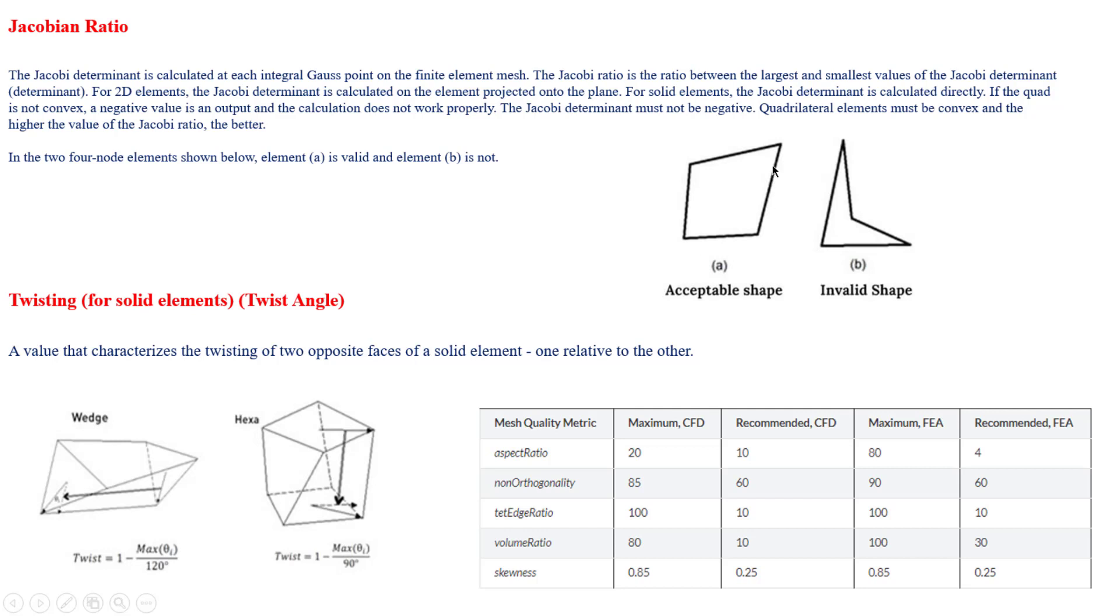When it comes to Jacobian ratio, you can see the example. This is the acceptable shape of a quad element, and this is not acceptable. You can check the definition from the statement here. These determinants are calculated at the integral Gauss points.